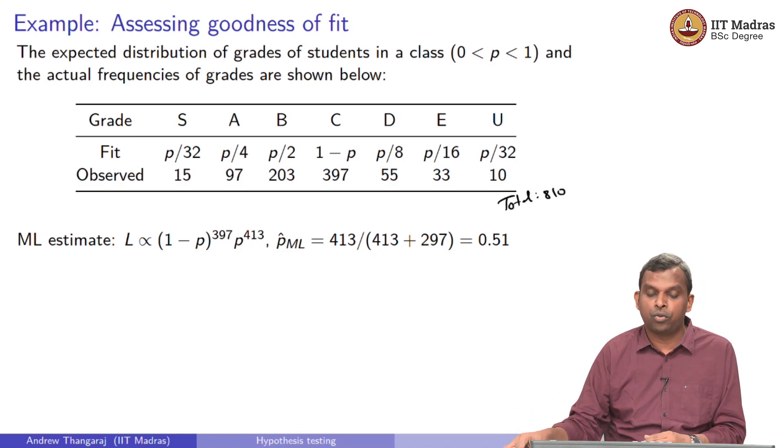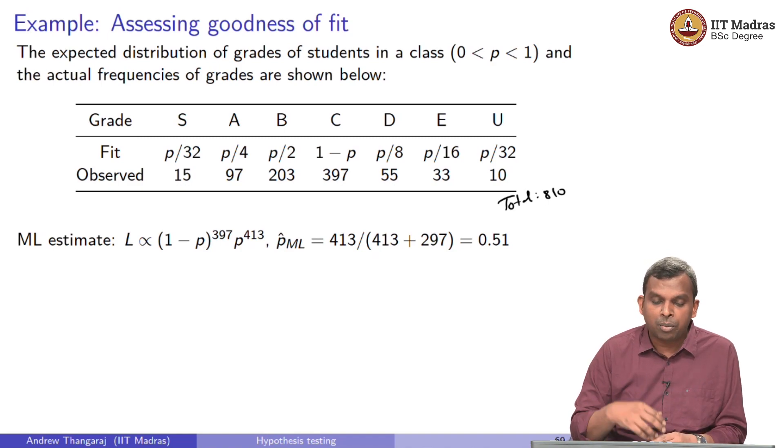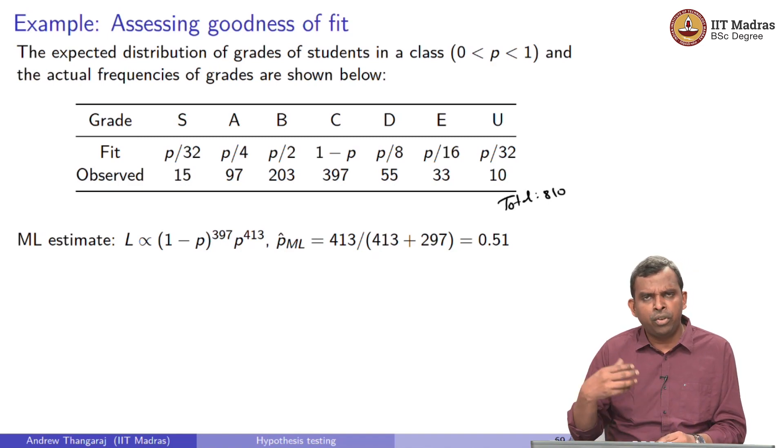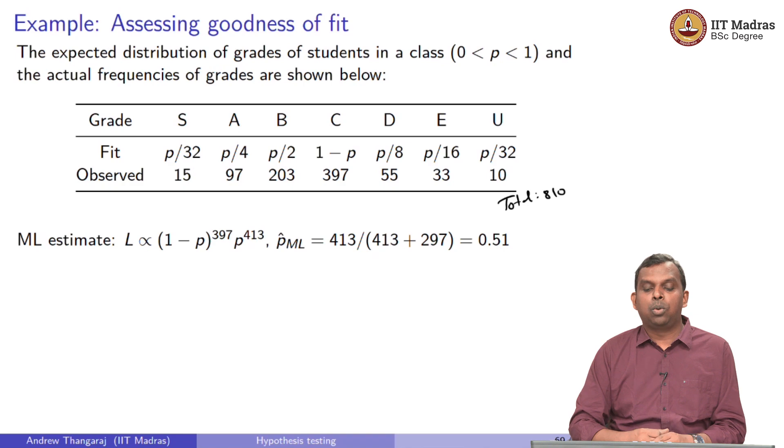Out of 810 students who went through for grading, 397 got C, 203 got B, 55 got D, and so on. So you observed this. From this observation, we know how to go ahead and find P. In fact, we can do an ML estimate for P. You know that the likelihood is proportional to (1 minus P) power 397 times P power 413, and from there you can solve for the ML estimate for P and that comes out to be 0.51. So it seems like a reasonable thing to do, we know that this works.